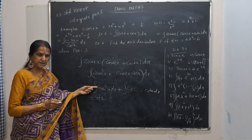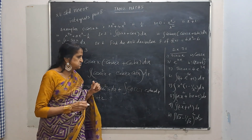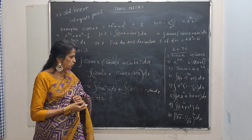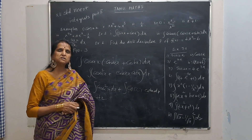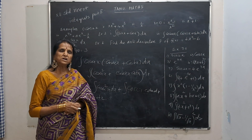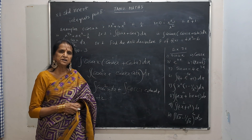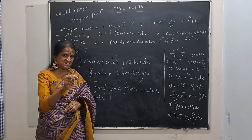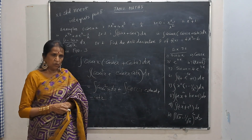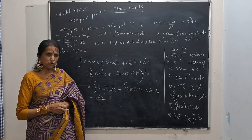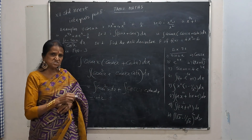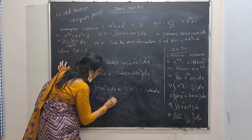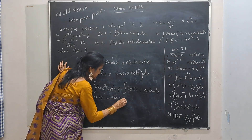What function when differentiated gives cosecant x cot x? What is the derivative of cosecant x? It is minus cosecant x cot x. So this will be minus cosecant x plus c. This will be the answer for this question.